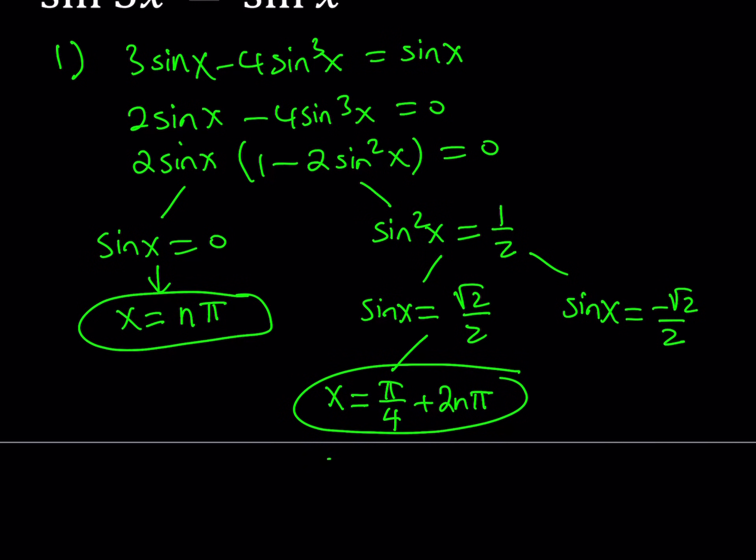Or, we can also subtract the pi over 4 from pi, which gives us 3 pi over 4, and then of course do the same thing, plus 2 n pi.